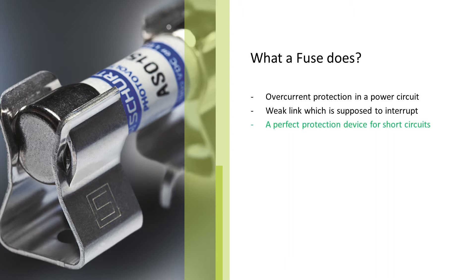A typical short circuit generates at least 10 times rated current to the fuse and to the whole power circuit. The fuse is a fantastic protection device against short circuits. It interrupts in a very accurate and short time frame, making it a very safe protection device.